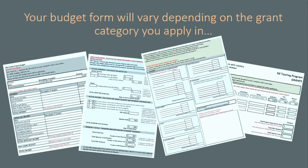Your budget form is going to vary depending on the grant category. You can see all four templates look vastly different and are for different categories. For this workshop today, we're going to focus on the Arts Project Plans. We are going to look at the APG grant — that's basically the third one from the left.